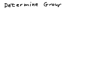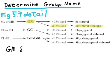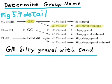Well, we're nearly done now, but we finally need to determine the group name. To determine the group name, we have to look in the detail of figure 5.7 again. We know that we have a GM material. Now, the question is, is it just a silty gravel, or is it a silty gravel with sand? In our case, we have more than 14% sand, so our soil classifies as a silty gravel with sand. And the final classification is GM, silty gravel with sand. That's all.